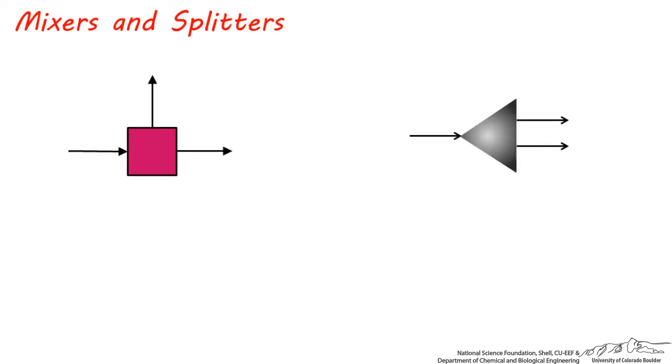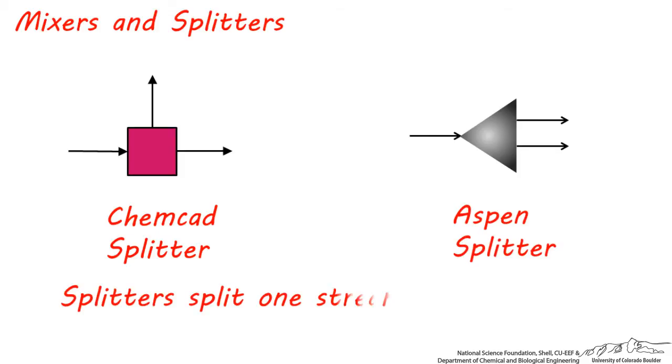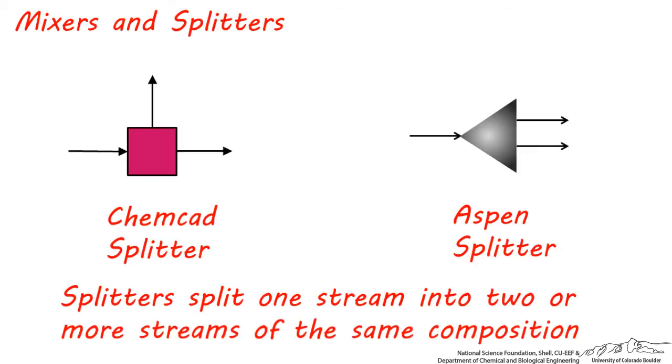This is a typical stream splitter used in ChemCAD, and this is one typically used in Aspen. The purpose of a splitter is to split one stream into two or more, so they can be sent to different process units.